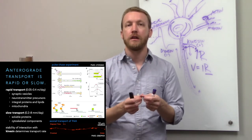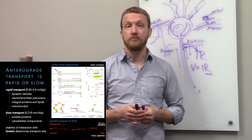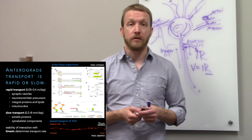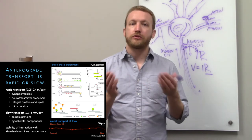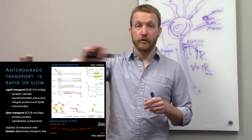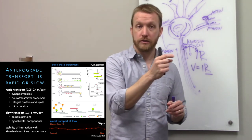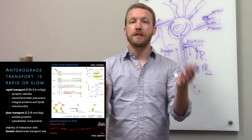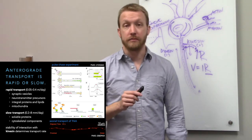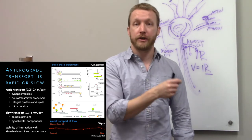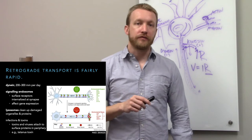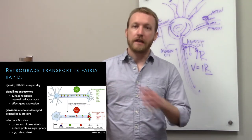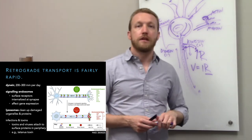Data from pulse chase experiments show different populations of molecules transported at different speeds — some arrive quickly, some moderately, some slowly. Those red dots running around are TrkA receptors, a neurotrophin receptor. Some move anterograde very quickly, some move retrograde. We're replenishing the axon with TrkA receptors, and after NGF binds, we take it back to the cell body. Retrograde transport is fairly rapid — not as fast as rapid anterograde, but definitely not as slow as slow anterograde transport.